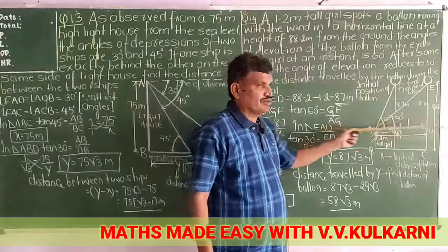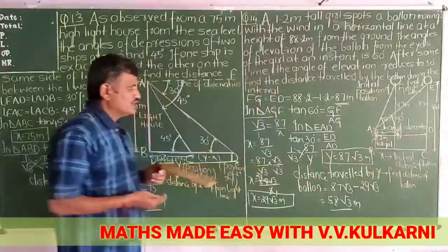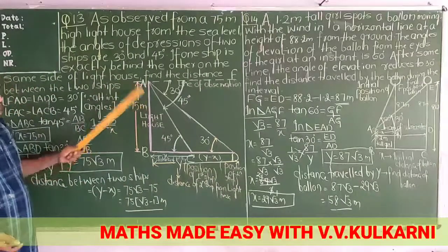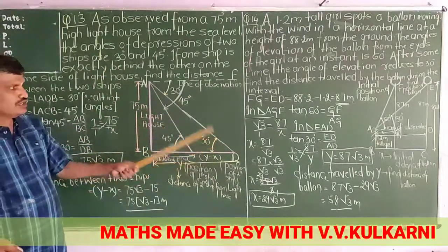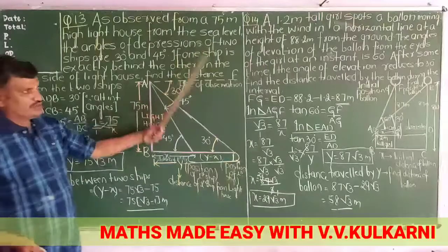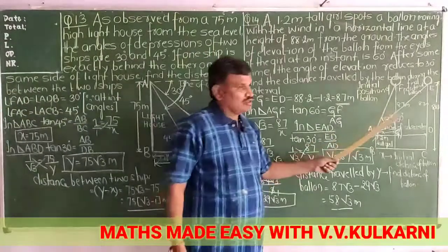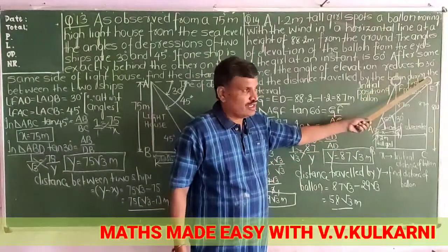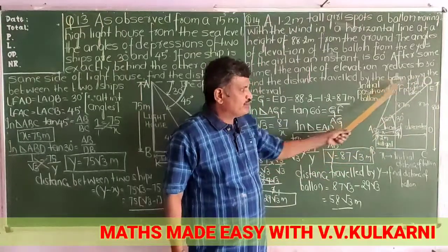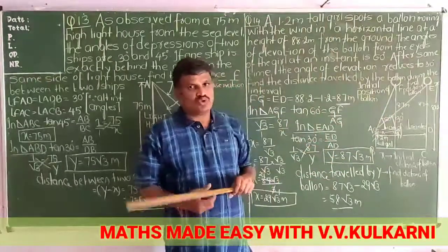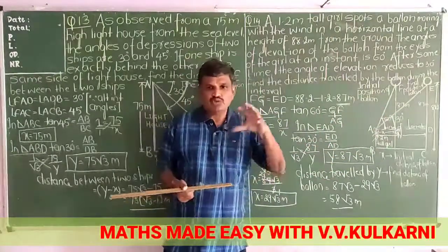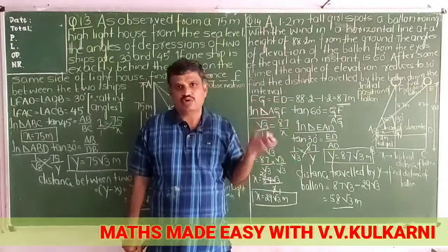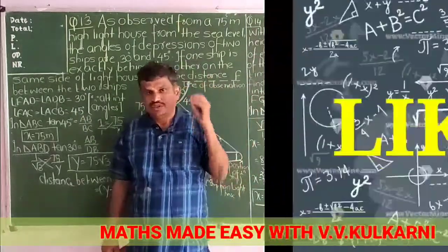Bacho, these two problems are almost same. The only difference is here underwater objects are there and depression is given, and here balloons are at the sky and angle of elevation is given, and here you find distance traveled. I hope you enjoyed it.